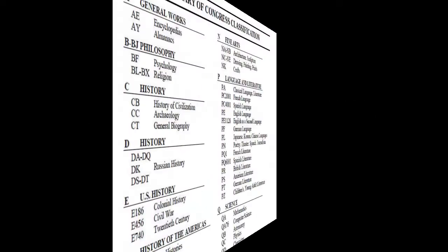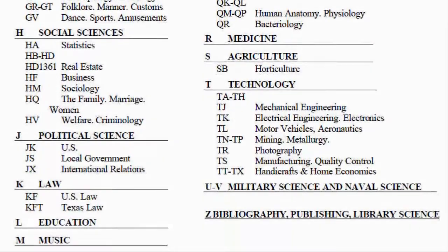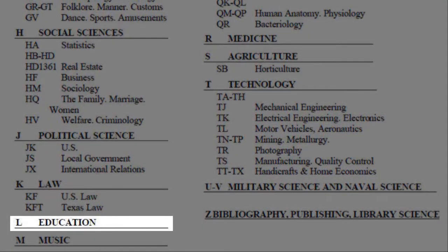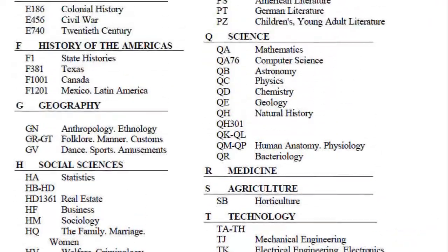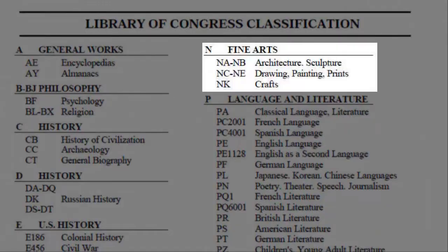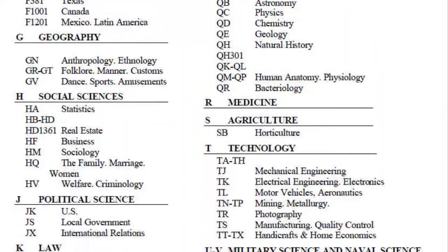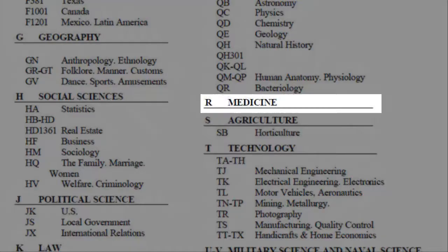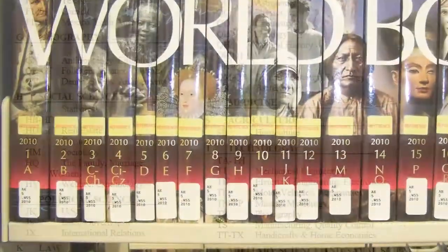LC divides the subject categories alphabetically into 21 classes. You can see from the chart, the books on Education would be located in the L's, the books on Art would be located in the N's, and the books on Medicine would be located in the R's.